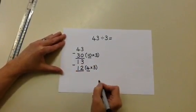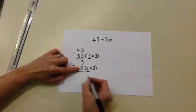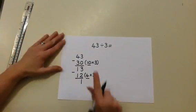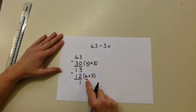So 3 subtract 2 is going to leave us with 1. 1 ten subtract 1 ten leaves us with 0. So we now have 1, which we cannot take 3 away from.